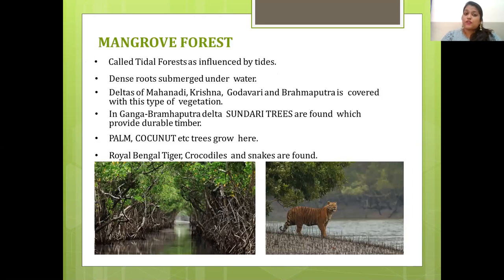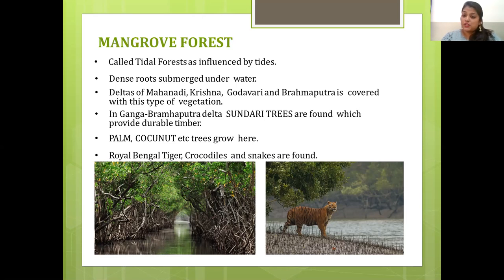The last kind of forest is the mangrove forest, also called tidal forest, as they are influenced by tides, with dense roots submerged under water. The deltas of the Mahanadi, Krishna, Godavari and Brahmaputra are covered with this vegetation. In the Ganga-Brahmaputra delta, Sundari trees are found, which provide durable timber. Palm and coconut trees also grow here. Common animals include Royal Bengal tiger, crocodiles and snakes.